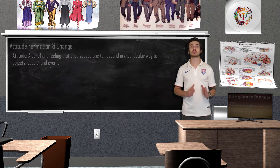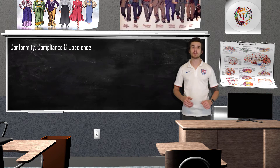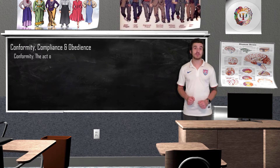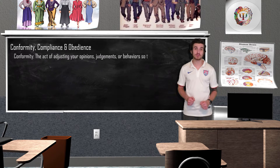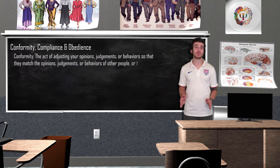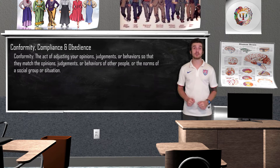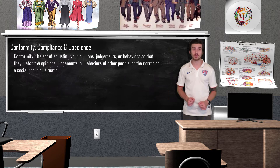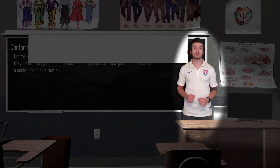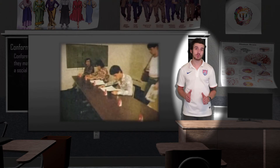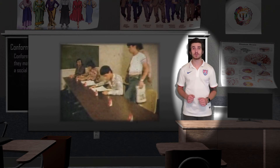Now let's move on to conformity, compliance, and obedience. Conformity is the act of adjusting your opinions, judgments, and behaviors so that they match the opinions, judgments, and behaviors of other people or the norms of a social group or situation. In 1962, psychologist Solomon Asch conducted his experiment on conformity. Asch wanted to investigate the extent to which social pressures from a majority group could affect a person to conform.